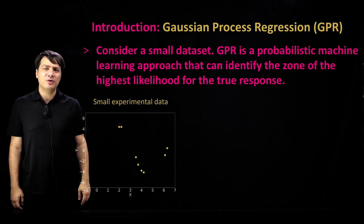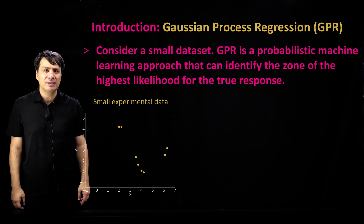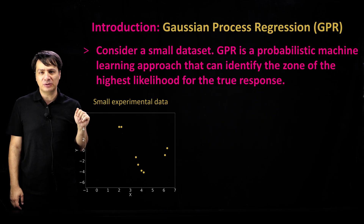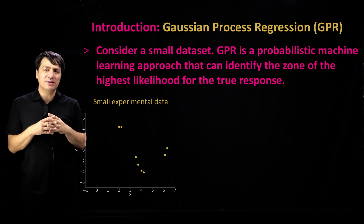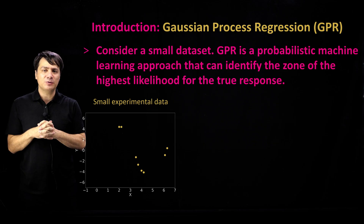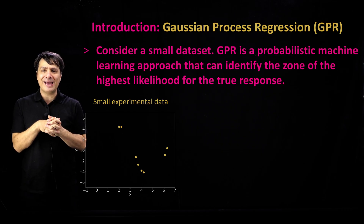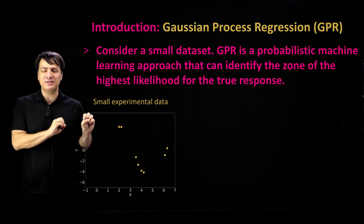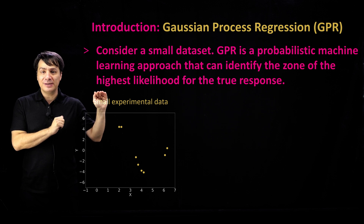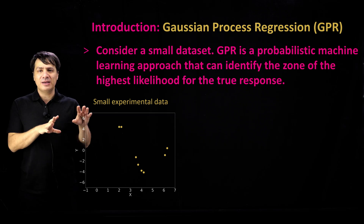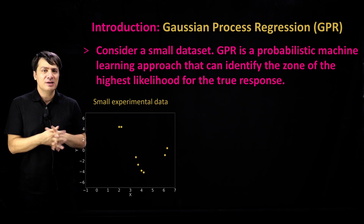In this section we are going to do a quick review of two other types of machine learning approaches. One is a probabilistic approach, and underlying that we are looking at Gaussian process regression, GPR. The other one is ensemble methods such as random forest, which we're going to go over quickly. These are traditional machine learning approaches — there is no physics involved here.